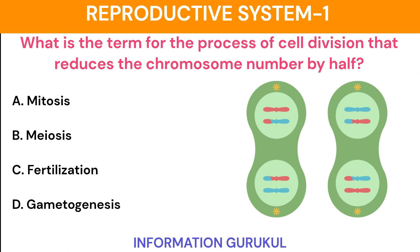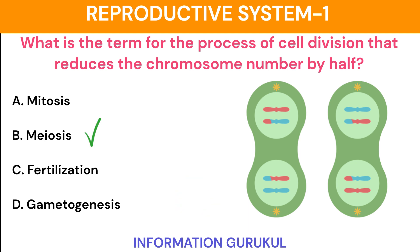What is the term for the process of cell division that reduces the chromosome number by half? Meiosis.